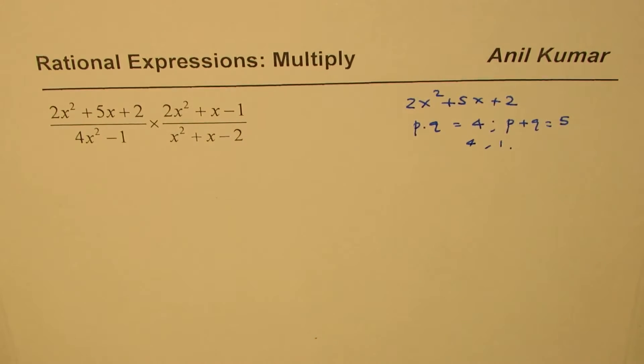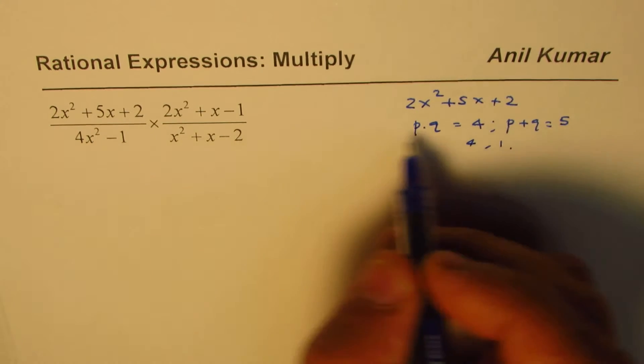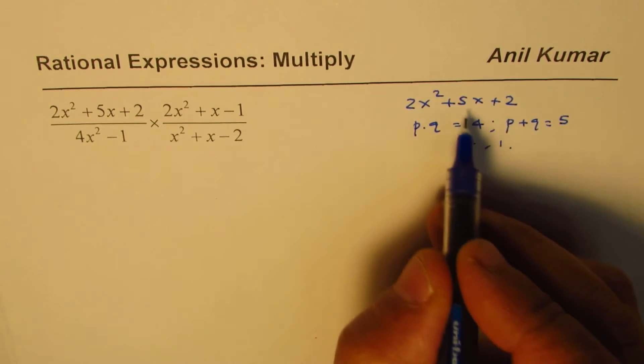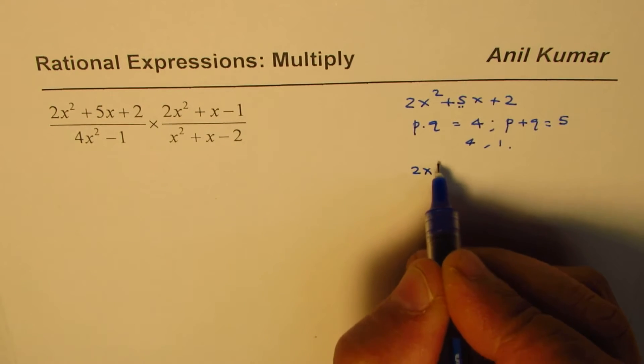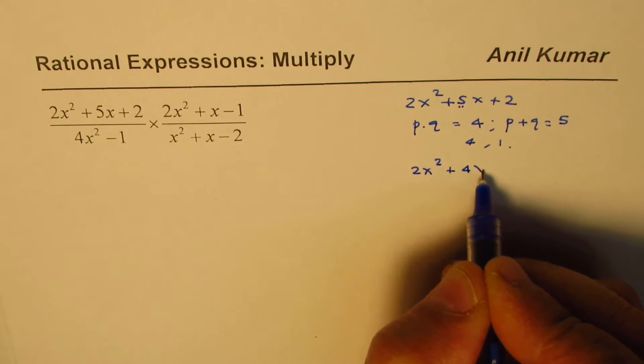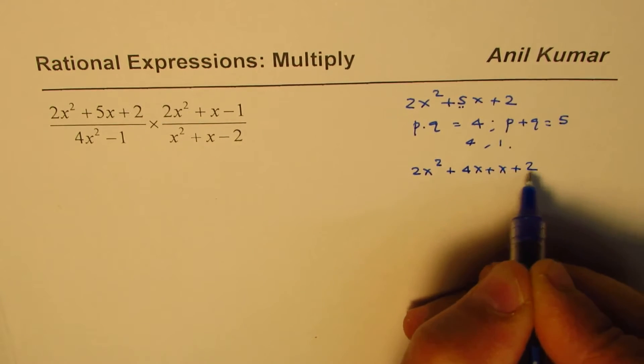And therefore, we could write the numerator of the first term as, well, factor it completely and then write it. I don't want to do it directly. So, when you get these two numbers, you have to split the number in between by these two. So, we have 2x squared plus 4x plus x plus 2. Now, you can combine these two terms and those two.